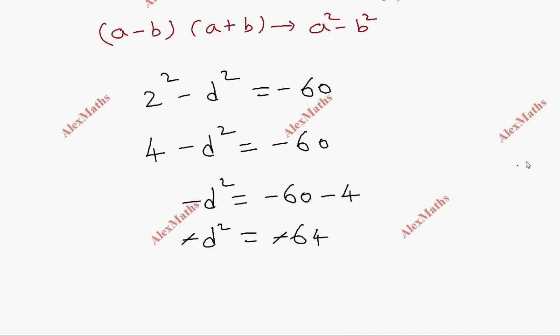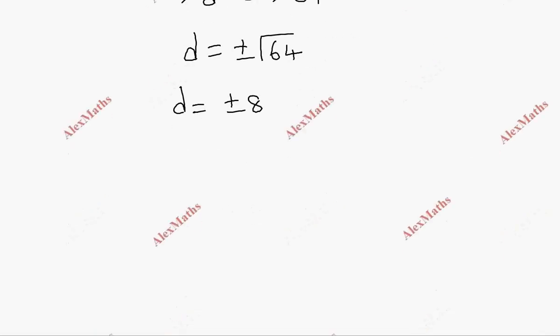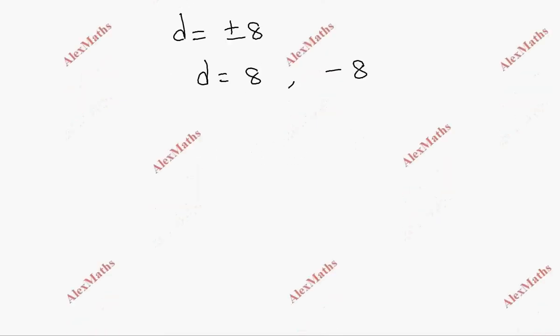Therefore -d squared equals -60 minus 4, which is -64. The minus signs cancel, so d squared equals 64, giving d equals plus or minus 8.